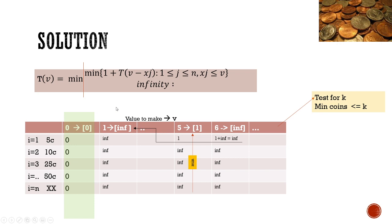Now, what is the order of this solution? The order of the solution, because you have n coins on this side and the value v on the x-axis, the order is nv. The order is nv.